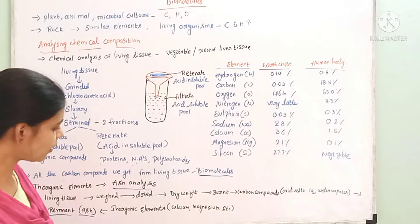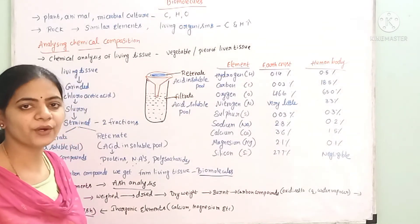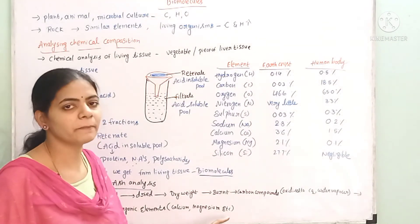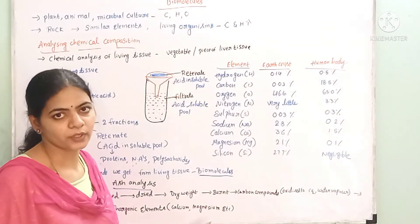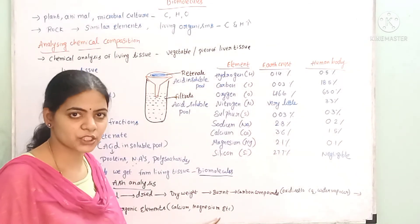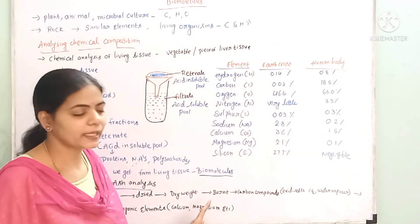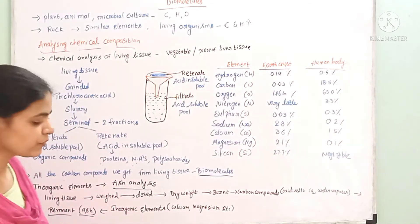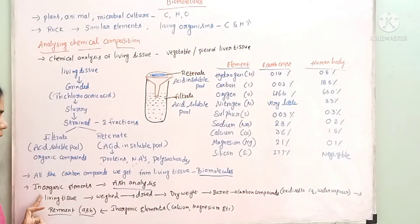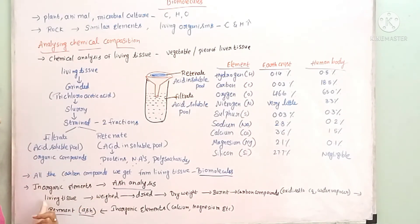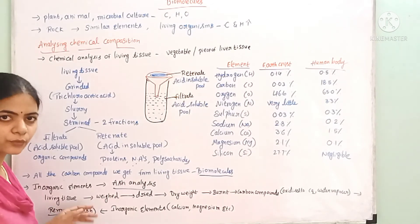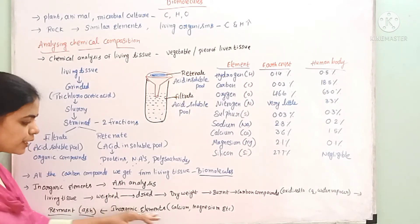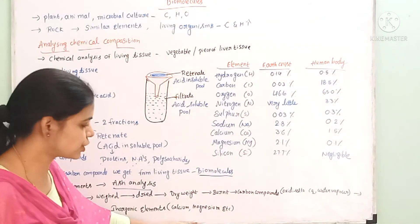What are the inorganic elements present in the living organisms? Calcium and magnesium, among others. From the dry weight analysis, we get the ash analysis, and from the ash we can identify elements like calcium and magnesium.